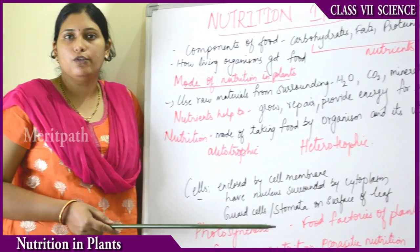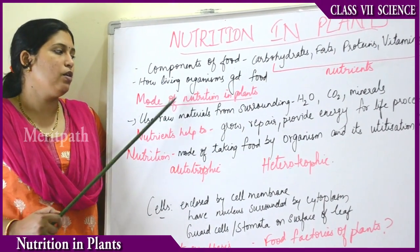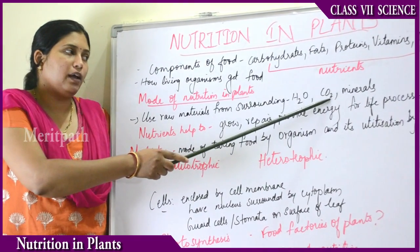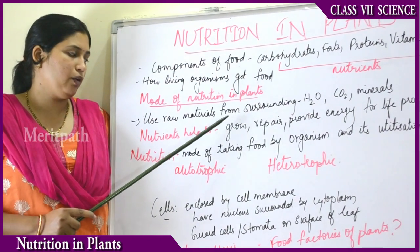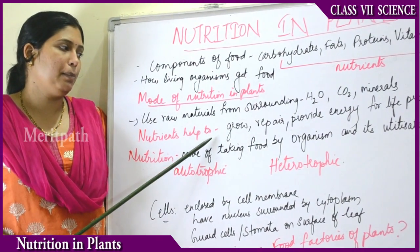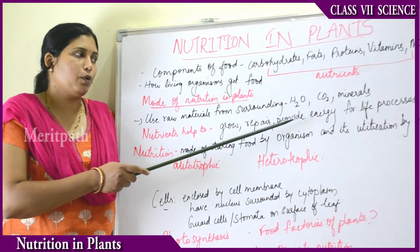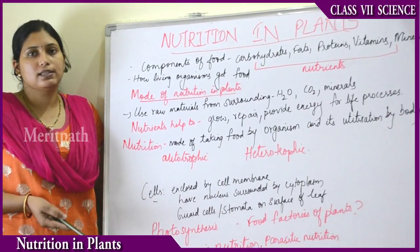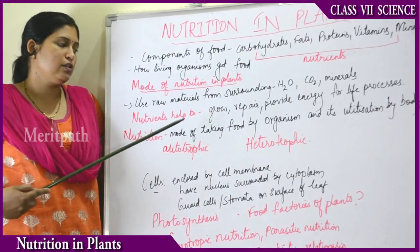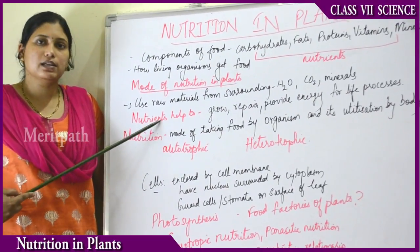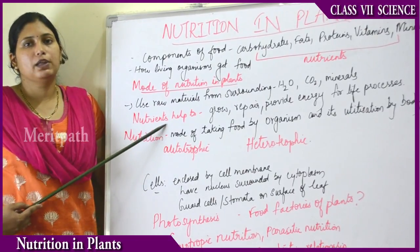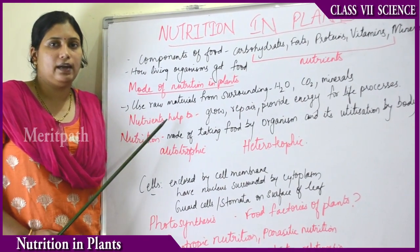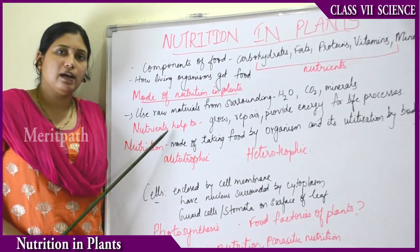How is food made? Plants use raw materials from the surroundings — water, carbon dioxide, and minerals — from the air and soil to make their own food. These nutrients help plants to grow, repair cells, and provide energy for all life processes. Even plants breathe, excrete, and reproduce — both sexually and asexually. Food is always prepared by plants in the presence of sunlight, so sunlight and water are essential for plants to prepare their food.